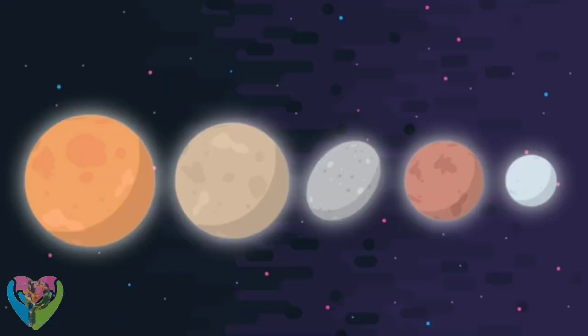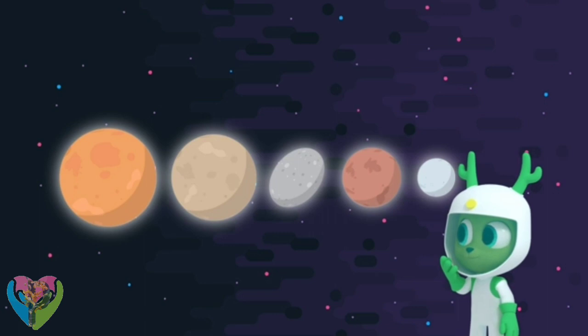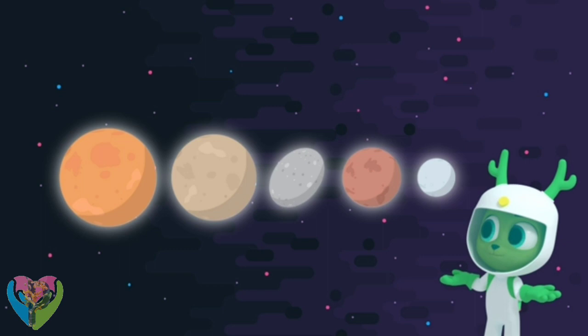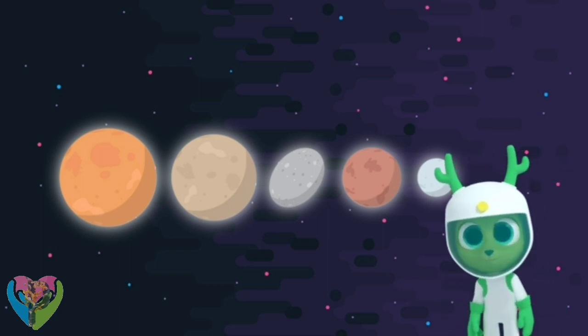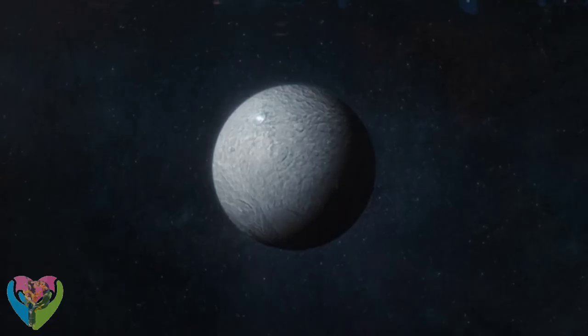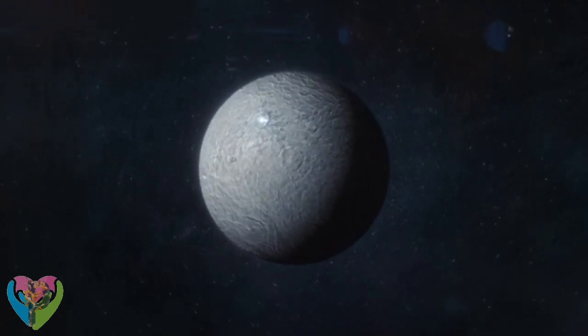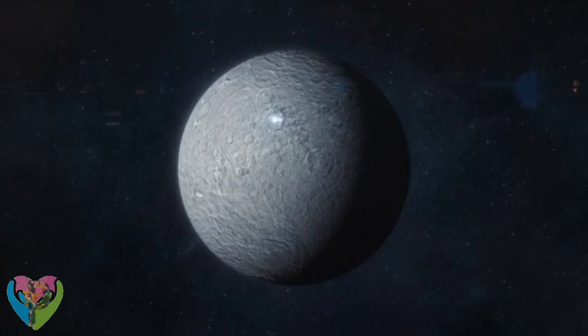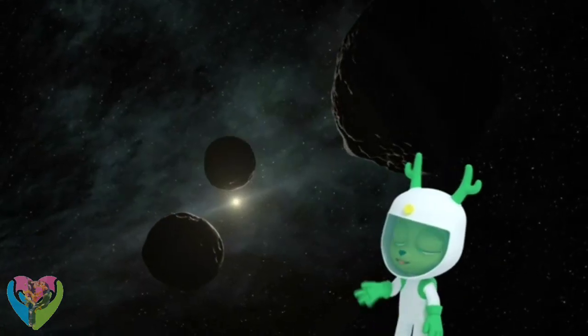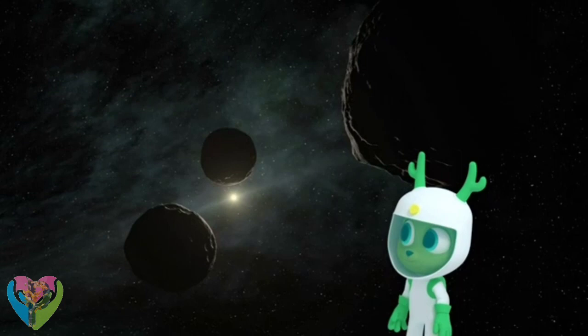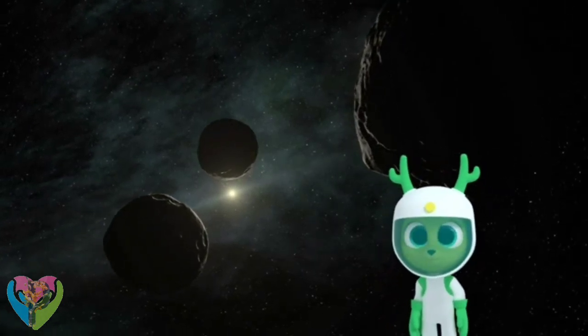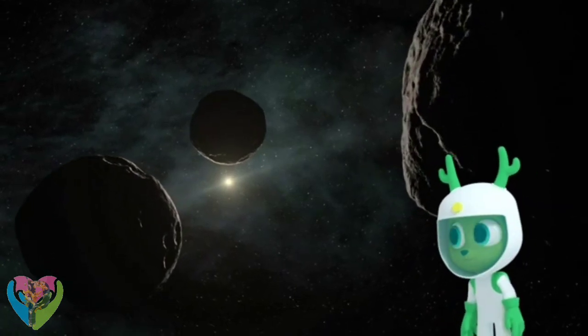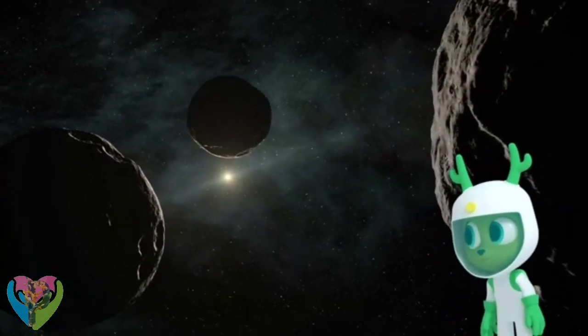And what about these? They look like planets, too, but I've never seen them before. Those are called dwarf planets. They're just like the other planets in our solar system, in that they only orbit the sun and have a rounded shape. Look at those asteroids! This is the main difference between the other eight planets and the dwarf planets. The dwarf planets haven't cleared away the space debris around them.